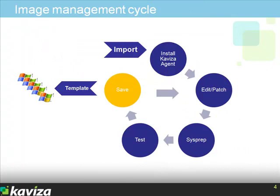With Kaviza, when you bring in a golden image, it goes through an image management cycle. We would import an ISO image, install the Kaviza agent on it, edit and patch it, sys prep it, test it, and publish it as a golden image. Once we have saved and published it as a golden image, we can generate templates and Kaviza provisions the virtual desktops. We have additional videos that walk through every step of this image management cycle.